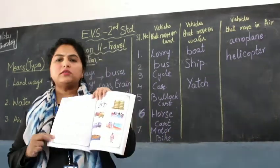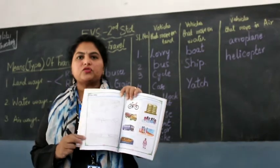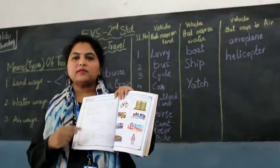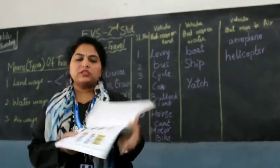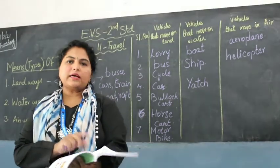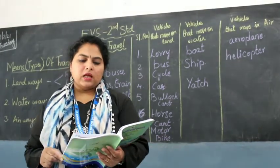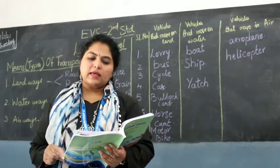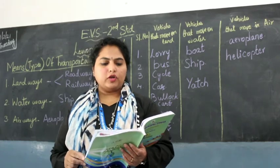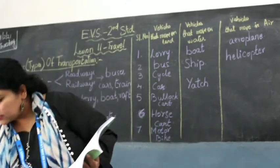There are dotted diagrams with pictures of vehicles — join the dots and color them. I want neat work, so send the picture to me. Also, vehicles and their users are given in the following picture — draw lines to match these.